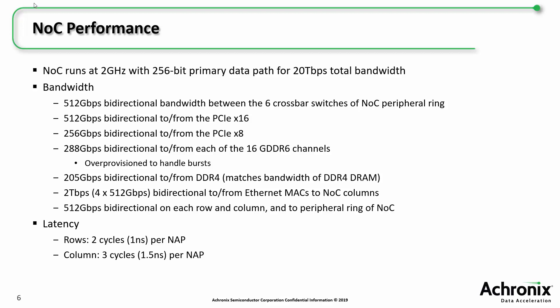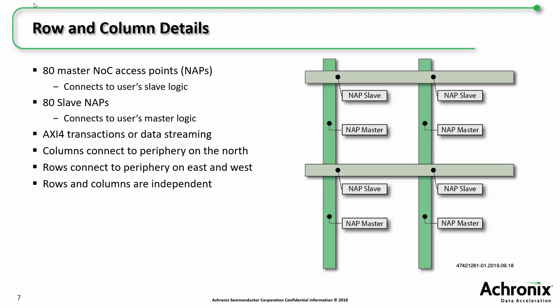It is also important to consider latency when creating a high-performance design. Traversing a row on the NOC takes two cycles, or one nanosecond, to get from one NAP to the next on the row. Traversing a column takes three cycles, or 1.5 nanoseconds, to get from one NAP to the next on a column. The Speedster 7T-1500 includes 80 master NAPs, which connect to a user's slave logic on columns, and 80 slave NAPs, which connect to a user's master logic on the rows.